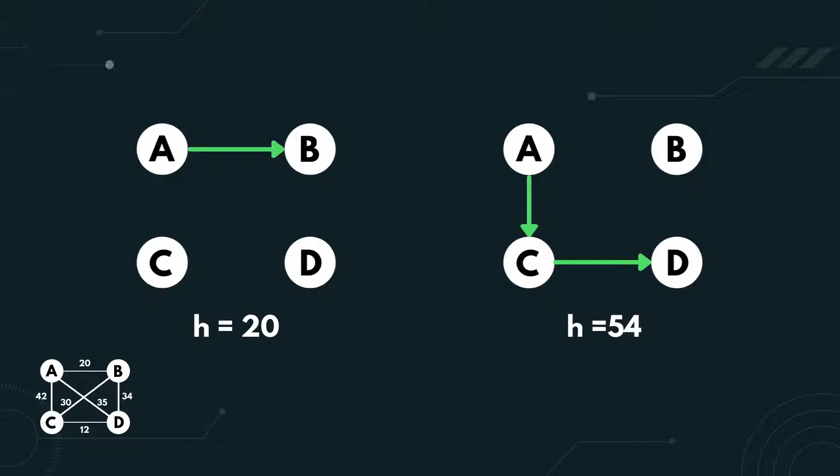Let's say one state is A to B with heuristic value 20. The other is A to C to D with heuristic value 54.